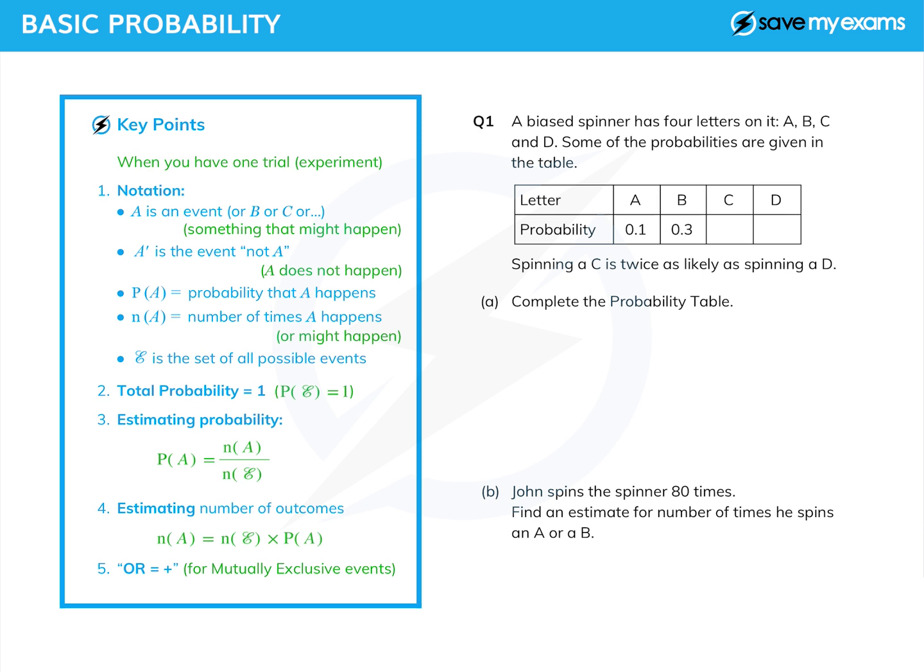And then there is one rule we need to think about, and that is, if you ever use the word OR in your probability, that means plus. And I will just say, that's only for things called mutually exclusive events. That just means that two things can't happen at the same time. So head and tail would be mutually exclusive events.